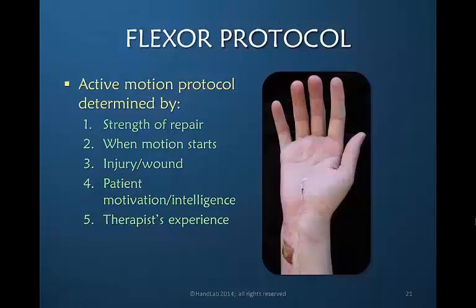There are many variables one must consider before deciding whether or not an active motion protocol is appropriate. The strength of the repair must be sufficient. When motion is started determines the risk. The extent and type of injury and the status of the wound play an important role. Both the motivation and intelligence of the patient determine whether or not they can follow precise instructions. And your experience as a therapist with this protocol, and the parameters of frequency and duration, all play a role in determining whether active motion is going to be successful for a patient. Two of the most important factors in my opinion are the strength of the repair and when you start motion. We will discuss these in much greater detail as we move through this presentation.